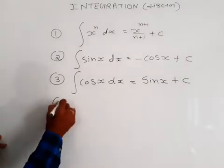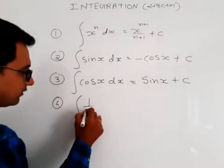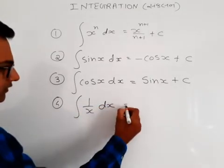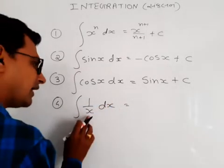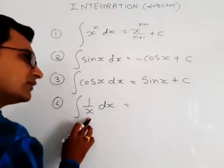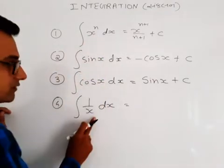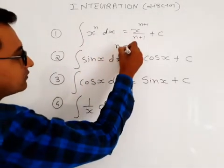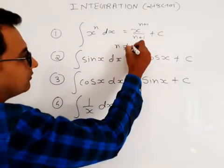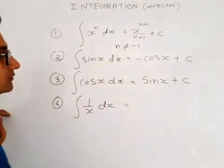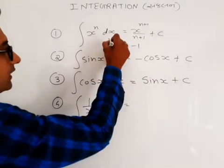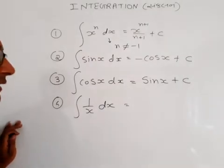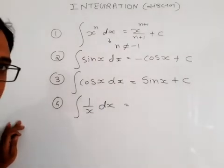Fourth one: integration of 1 upon x dx. You might feel like using x raised to minus 1 — but here n does not equal to minus 1. If we apply the power rule with n equal to minus 1, it would give x raised to minus 1 plus 1, which is x raised to 0, divided by 0 — that is undefined.